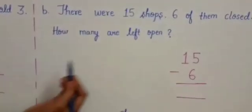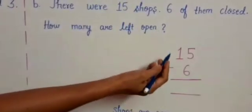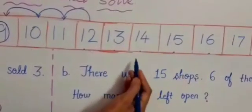So how many shops? 15 shops. How many are closed? 6 are closed. We will start from number 15. How many steps we have to go backward? 6.